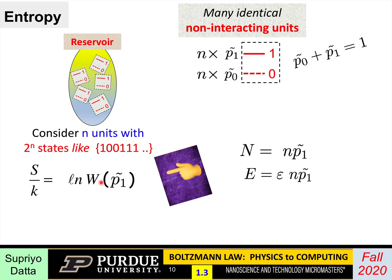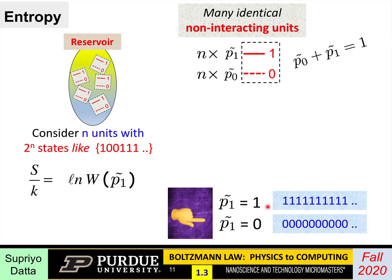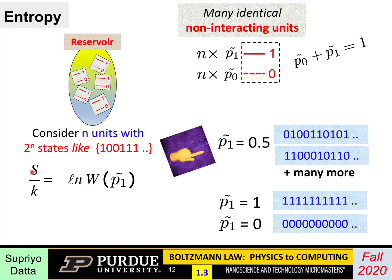Supposing p1 were 1, then there's only one state that one could write down. That's all ones. Or if the p1 were 0, it would be all zeros. And so W would be 1, and so the entropy would be 0. On the other hand, if the probability is say 50 percent, 0.5, that means half are 0 and half are 1. And then you see there are many ways of writing that. And so there will be lots of states. W will be a big number, and the corresponding entropy would also be big.